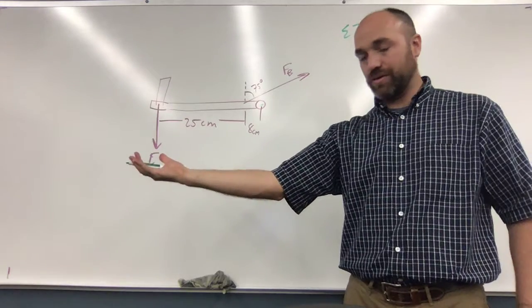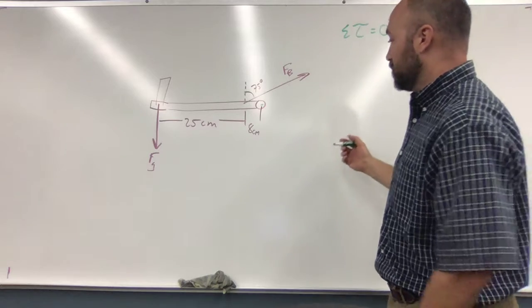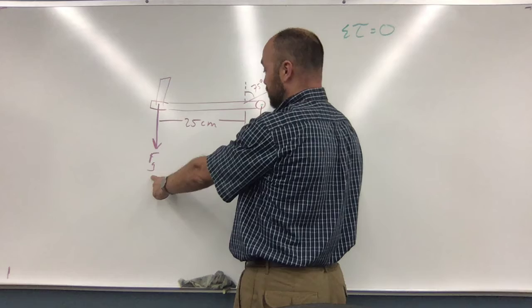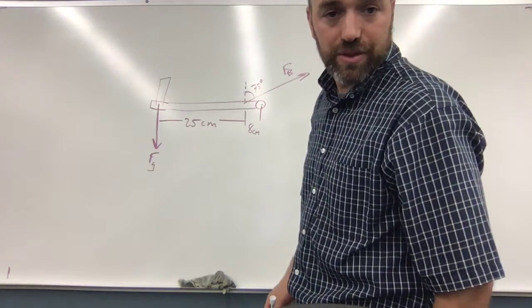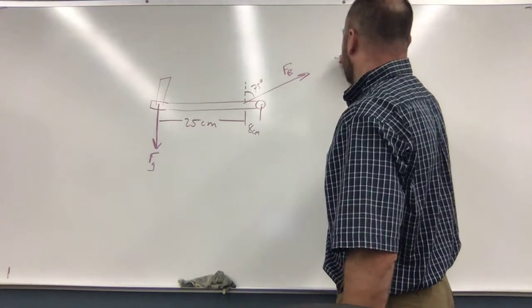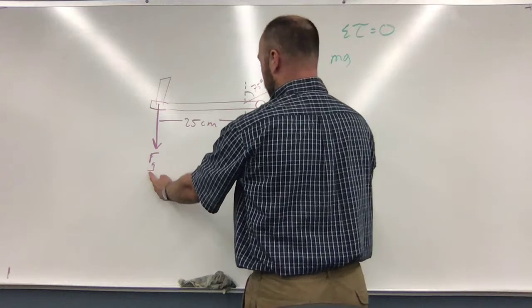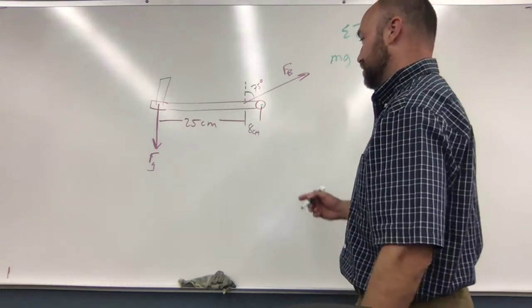And so we look at this first torque, gravity milk carton, and so the force would be mg. Does it give you that? Gives you mass, right? So it'll be mg. That's the force times the distance here which would be 25 plus 8... 33.